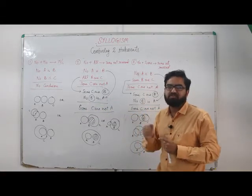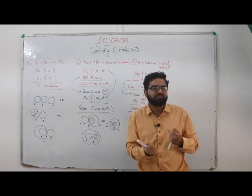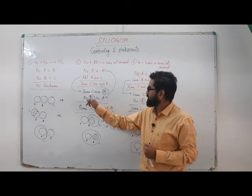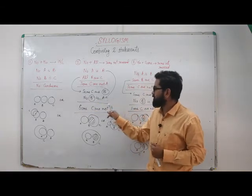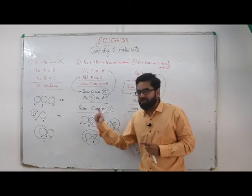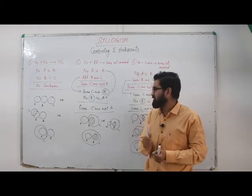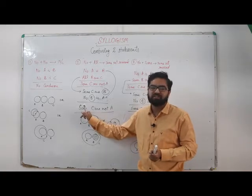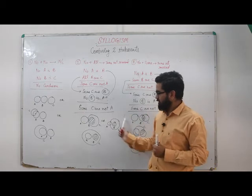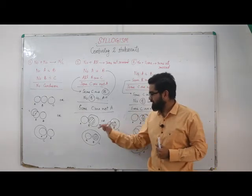So this is some plus no, and the previous video we have seen some plus no is some not. So the conclusion will be some C are not A. So from A to C there is no conclusion possible, but from C to A we have conclusion as some C are not A.